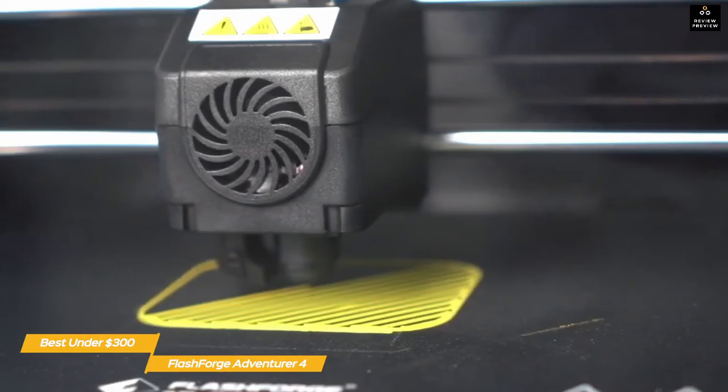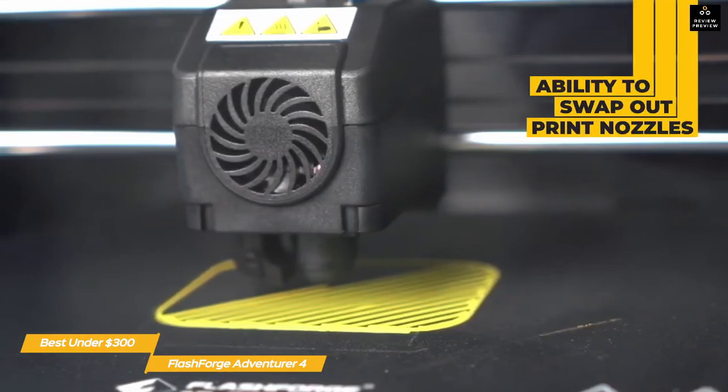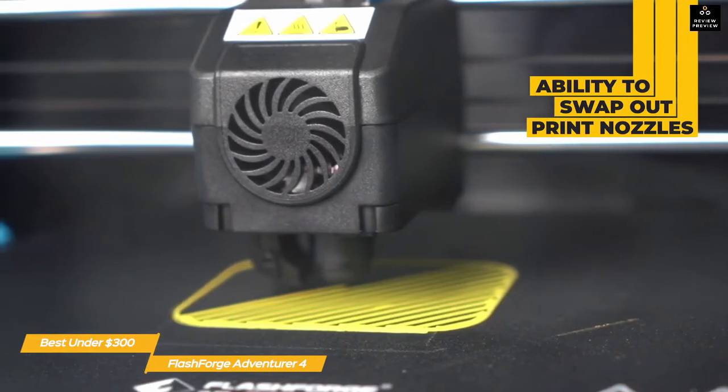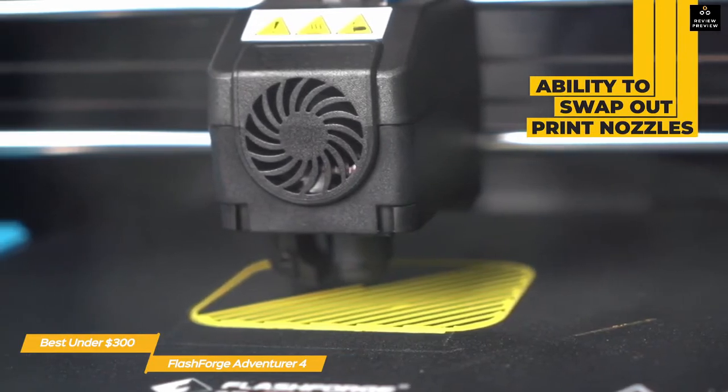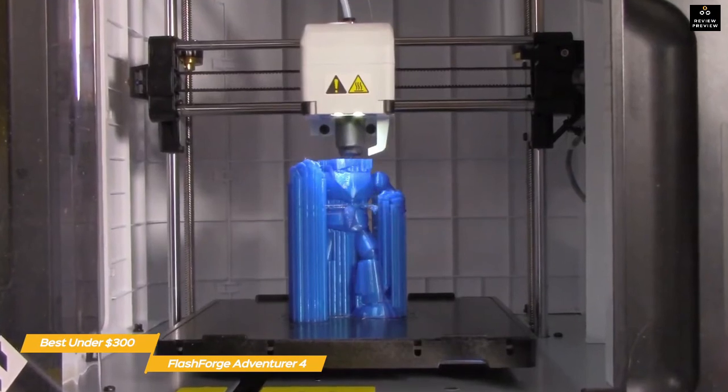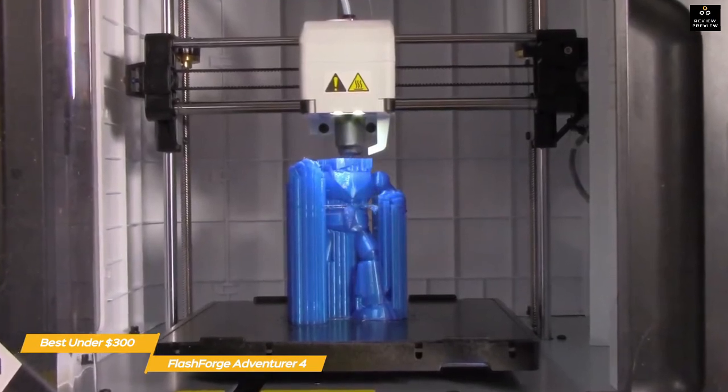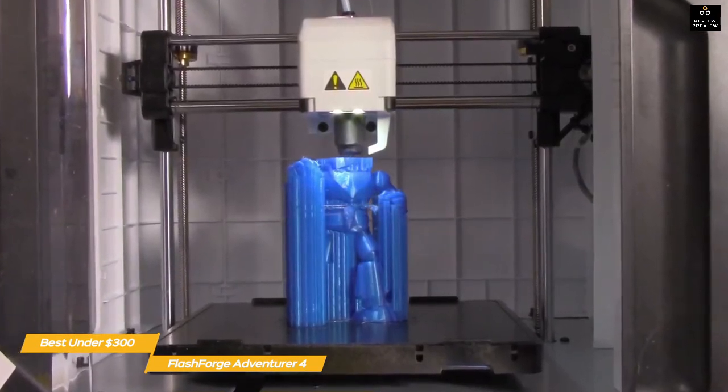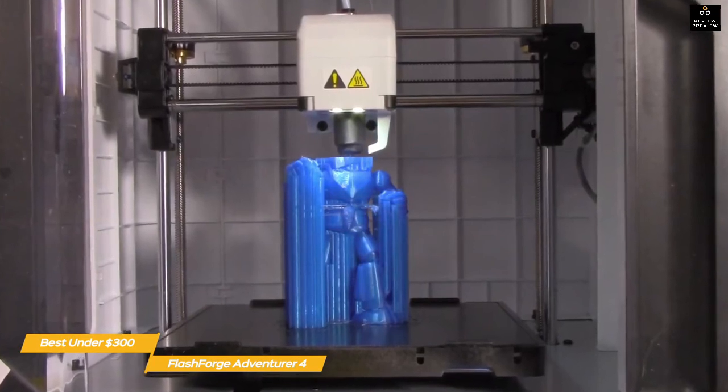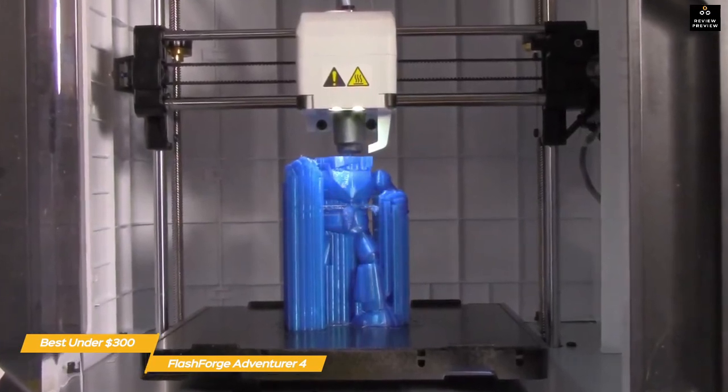One of the biggest advantages the Adventurer 4 has is its ability to swap out print nozzles between 0.3, 0.4, and 0.6 millimeter sizes. Of the two 0.4 millimeter nozzles, one is designed to work at 240 degrees Celsius, while the other works at 265 degrees Celsius for materials like nylon that require higher temperatures.